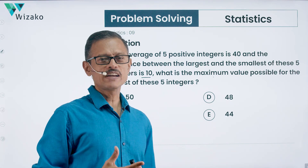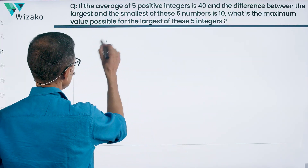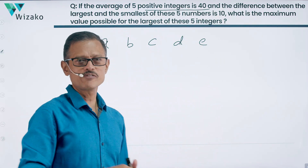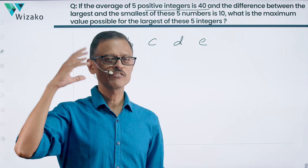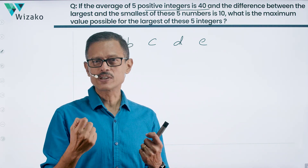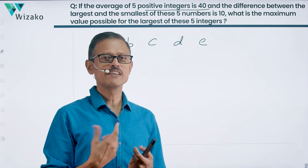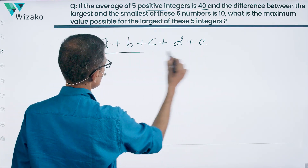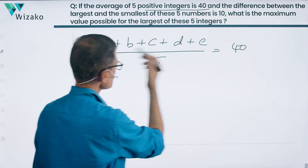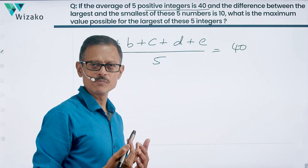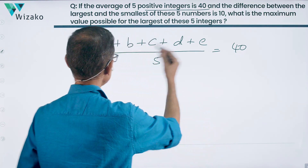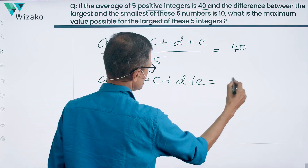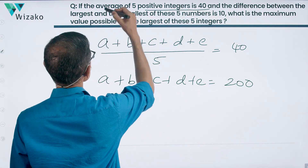We need to find the maximum value possible for the largest of these 5 integers. Let's assign 5 variables — A, B, C, D, E — to these 5 integers. They said the average is 40, which means the sum of these 5 numbers divided by 5 equals 40. So A plus B plus C plus D plus E divided by 5 equals 40, meaning the sum of these 5 numbers equals 200.